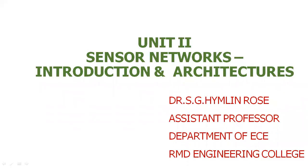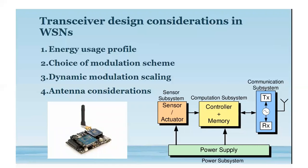Good morning. Today we are going to discuss transceiver design considerations in wireless sensor networks at the physical layer in Unit 2, Sensor Networks: Introduction and Architecture. The design considerations are: first, the energy usage profile; second, the choice of modulation scheme; third, dynamic modulation scaling; and fourth, antenna considerations.